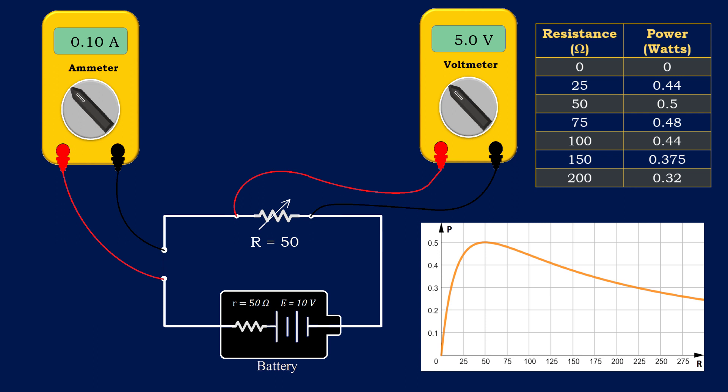This is the graph of power plotted against resistance of the sink. Notice that power is maximum when the resistance of the sink is equal to the internal resistance of the power supply.